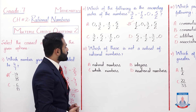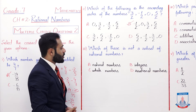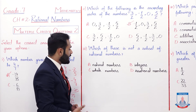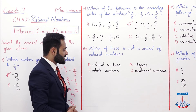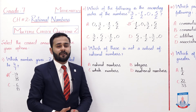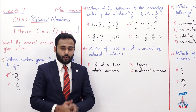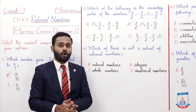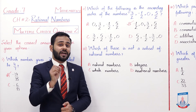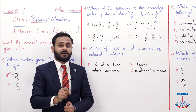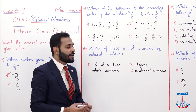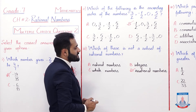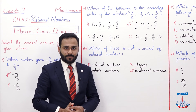MCQ number 3: Which of these is not a subset of rational numbers? In mein se kaun sa rational number ka subset nahi hai? Options: A) Natural numbers, B) Integers, C) Whole numbers, D) Irrational numbers. Rational numbers ke subsets hain natural numbers, integers, aur whole numbers. Lekin jo irrational numbers hote hain, wo rational numbers ke subset nahi hote. So option D is correct — irrational numbers are not the subset of rational numbers.